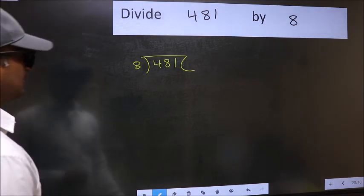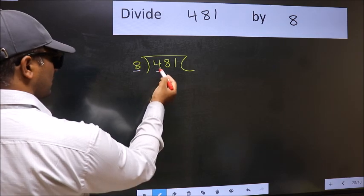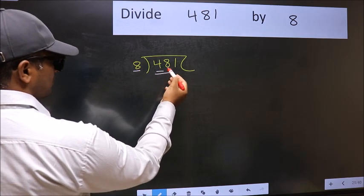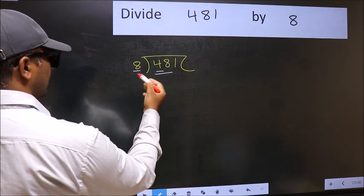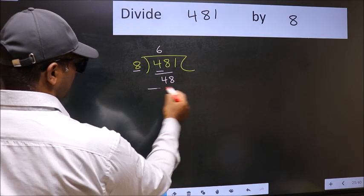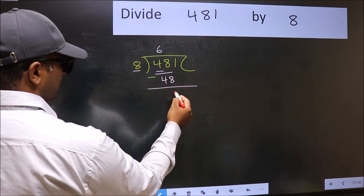Next. Here we have 4 and here 8. 4 is smaller than 8, so we should take two numbers, 48. When do we get 48 in 8 table? 8 times 6 is 48. Now we should subtract. 48 minus 48 is 0.